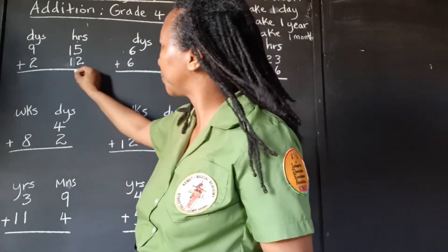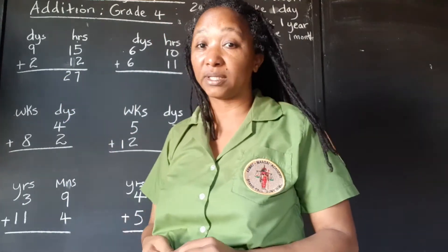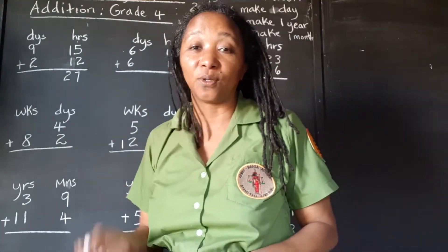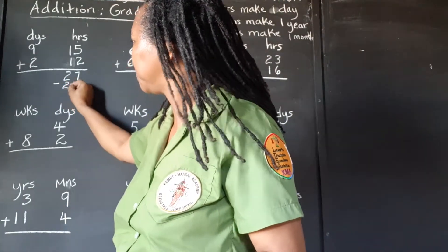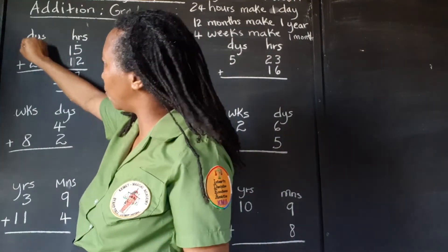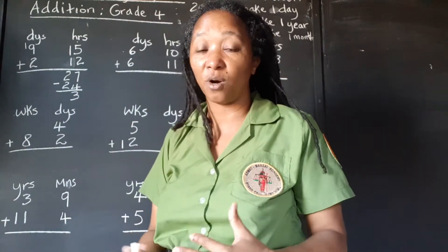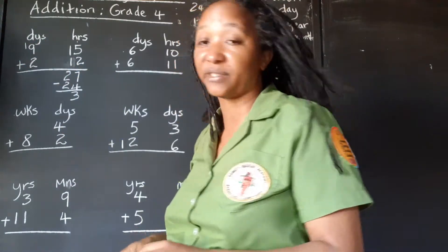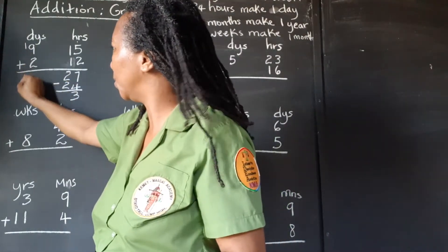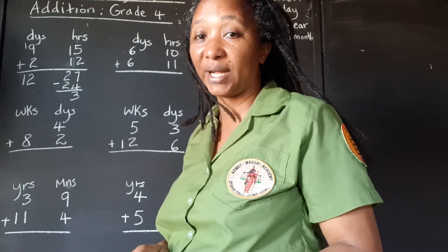So let's add and see. 5 and 2 is 7, 1 and 1 is 2. So we have 27 hours. But we know we're not supposed to have more than 23, because once it gets to 24 we can transfer that as one day. So we're going to take out the 24. We have 3 hours remaining, and this 24 hours we're going to carry it over as one full day. So we can't leave the 27 hours — we take out a group of 24, put it over in the days because that's one full day. 24 hours make one day, and we're left with 3 hours. Now we add the days: 9 and 1 is 10, and 2 is 12. So our final answer is 12 days and 3 hours.